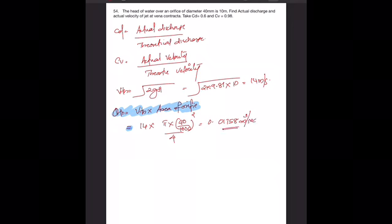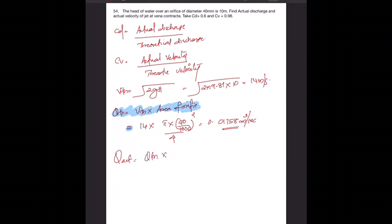Now you can easily find out actual discharge. Q actual equals Q theoretical times cd, and v actual equals theoretical velocity times cv. Let me write those answers.